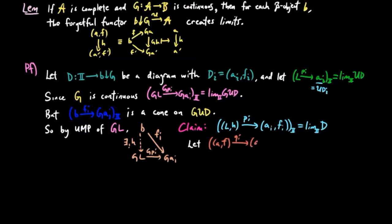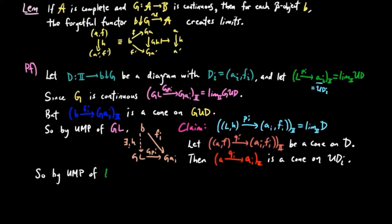So let QI from AF to AIFI be another cone on D. Then QI is a cone on UD.